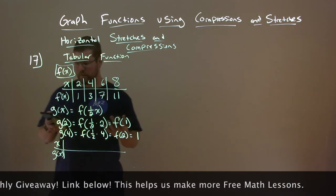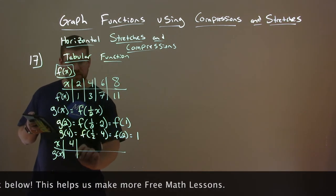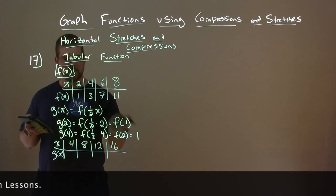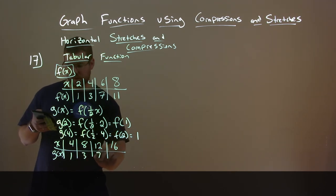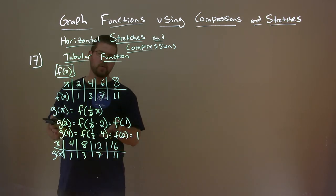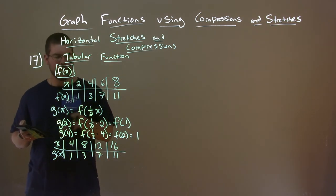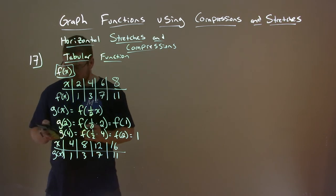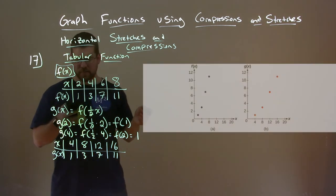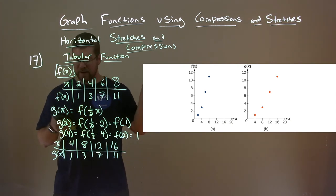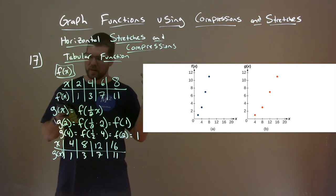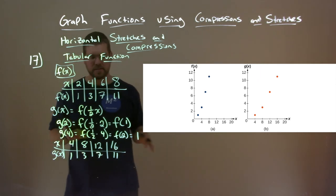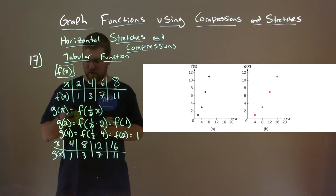We're going to change our input values — we have to double them. So our new inputs are 4, 8, 12, and 16. By doubling them, we get the same output values as before: 1, 3, 7, and 11. We now have our table of x and g of x. The same output values occur at different — doubled — input values. Looking at the graph, f of x is the blue dots and g of x is the orange dots: the x values are doubled but the y values are the same for each corresponding dot.